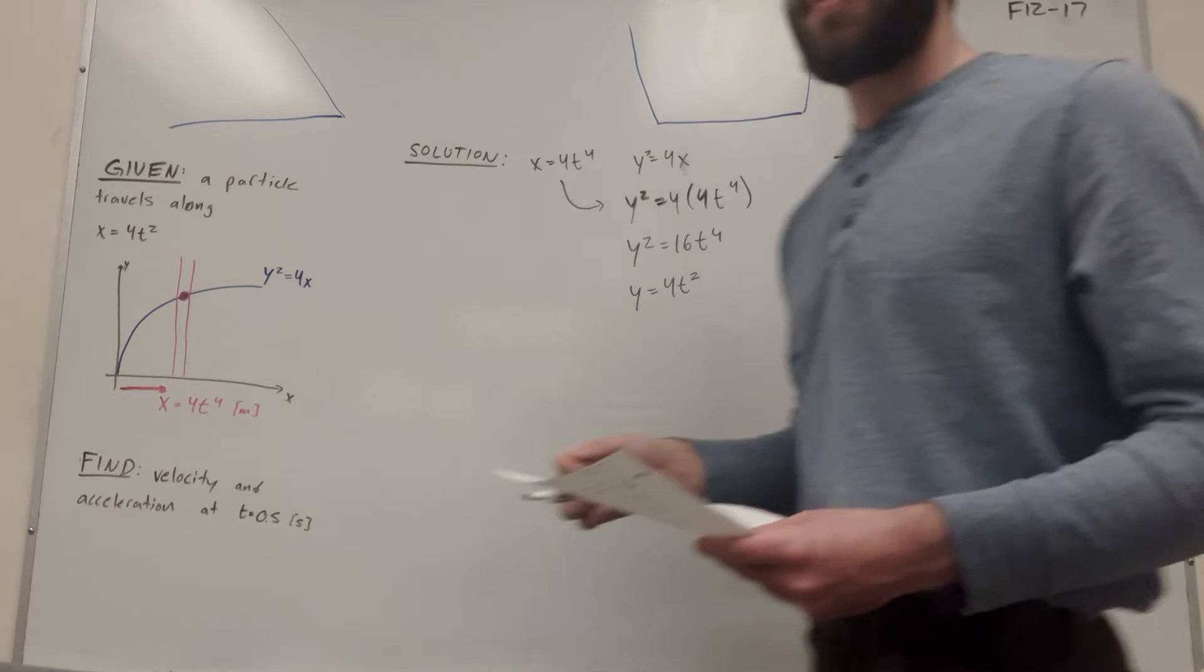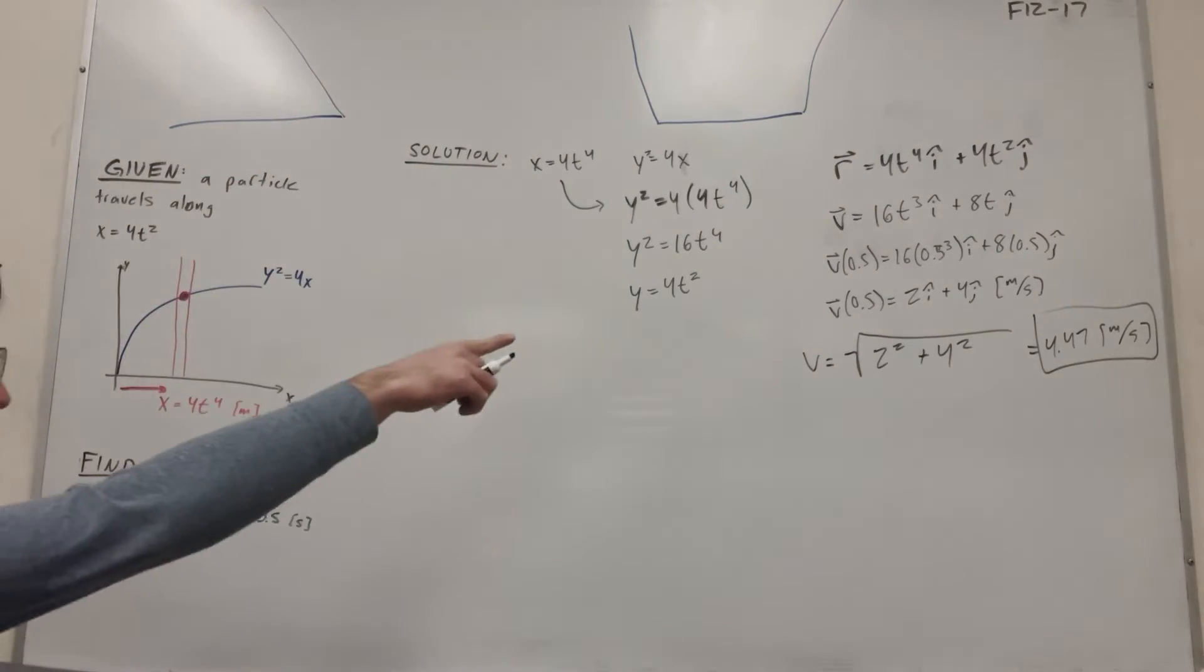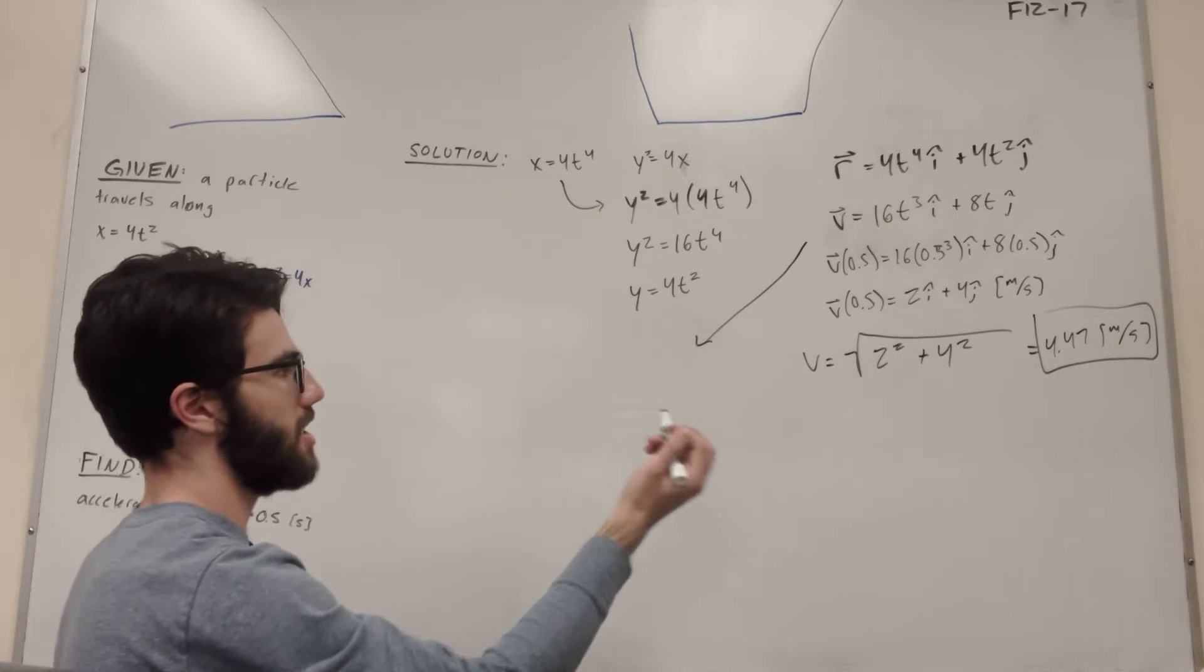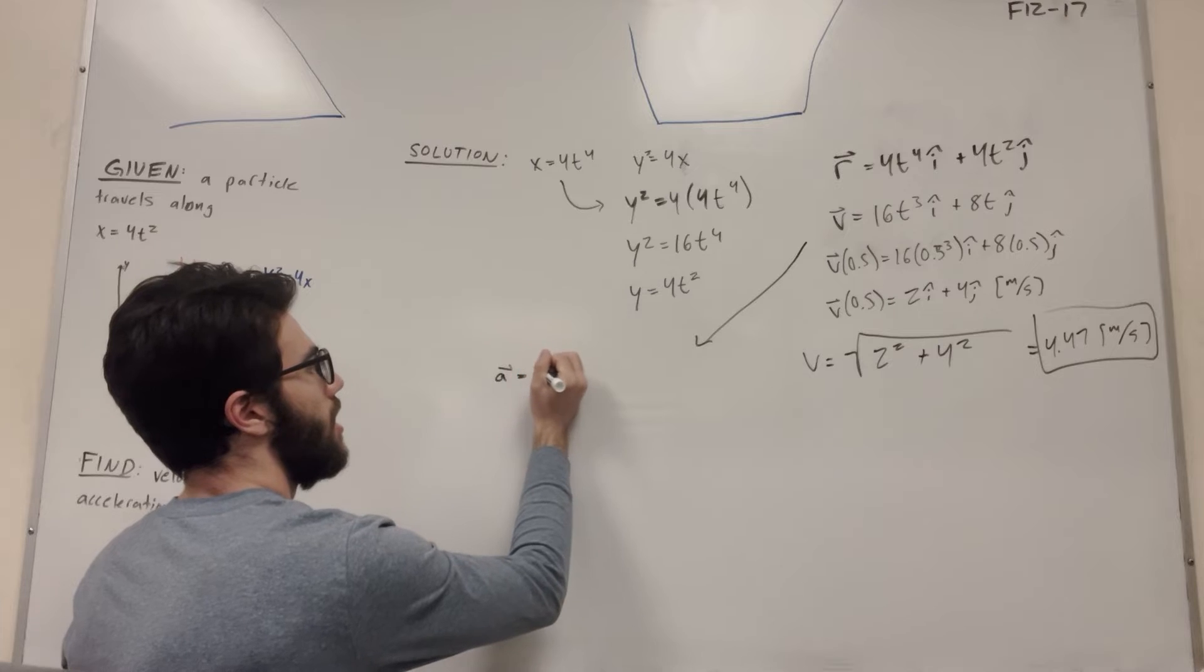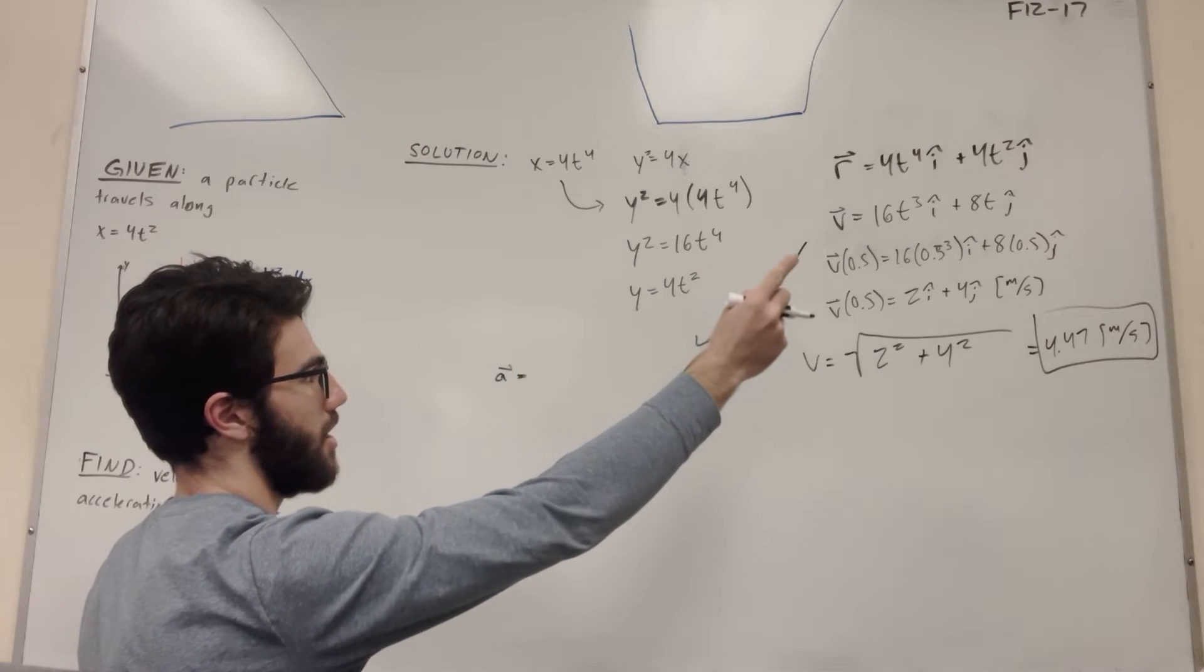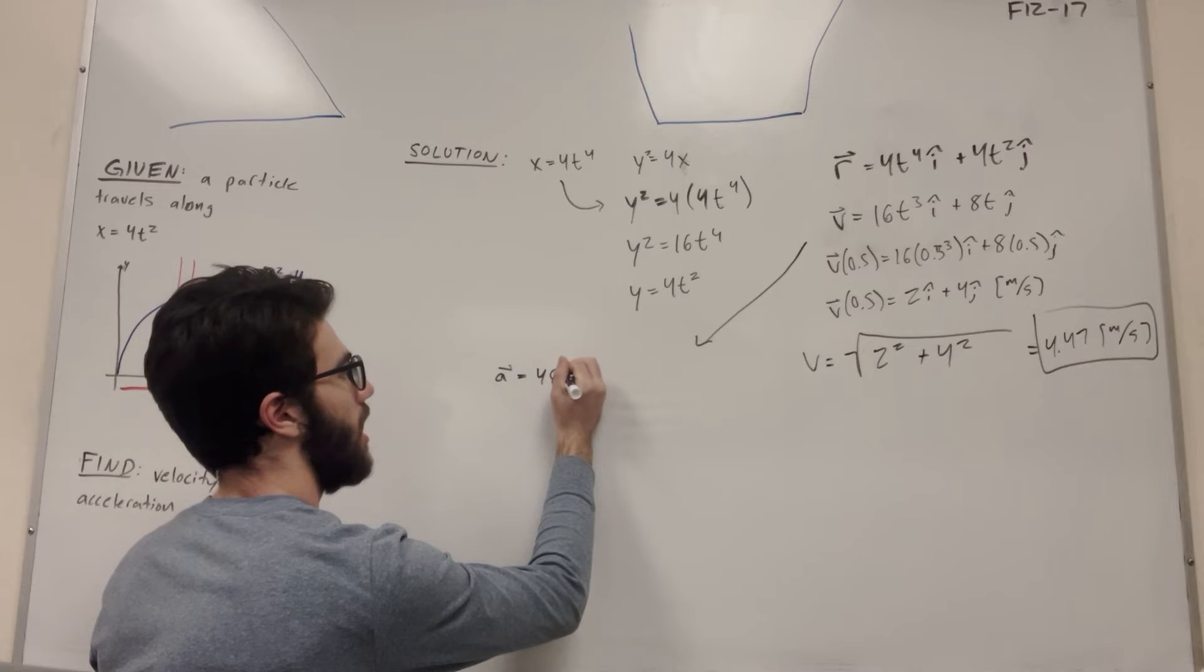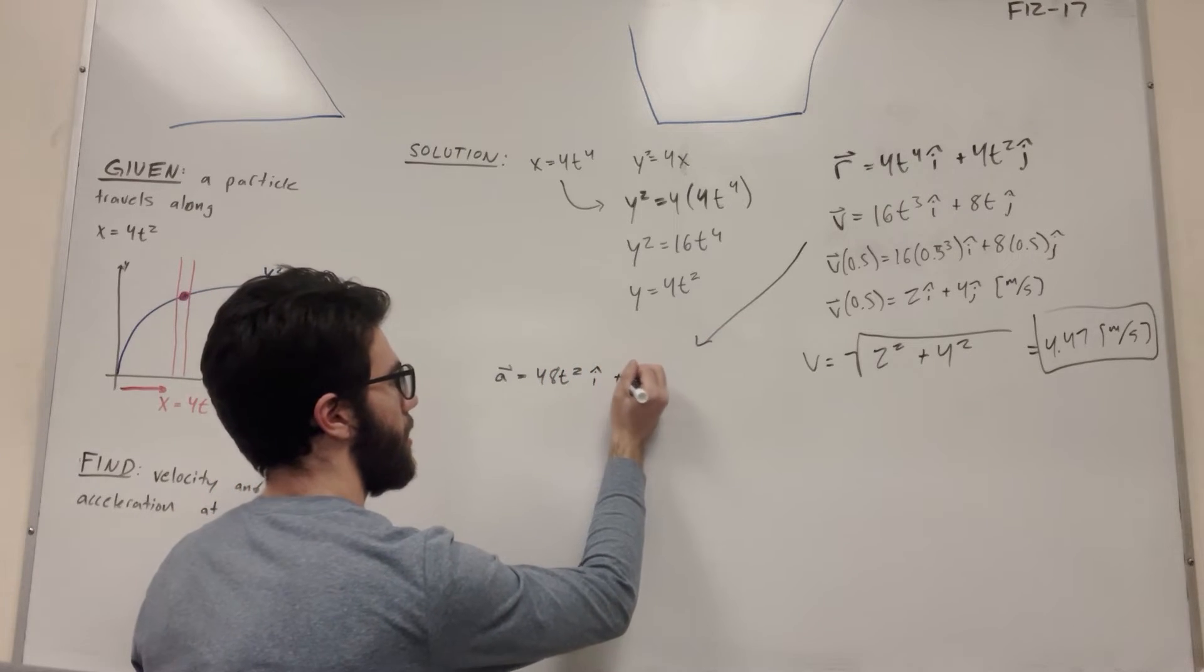So now we need to find the acceleration. So our acceleration is going to be similar. We're going to take another derivative. So let's go back to this here. We have velocity. Let's take the derivative of velocity to find acceleration. So 16t to the 3rd, we're going to bring that 3 down. It's going to become 48t squared i. And then 8t is just going to become 8j.